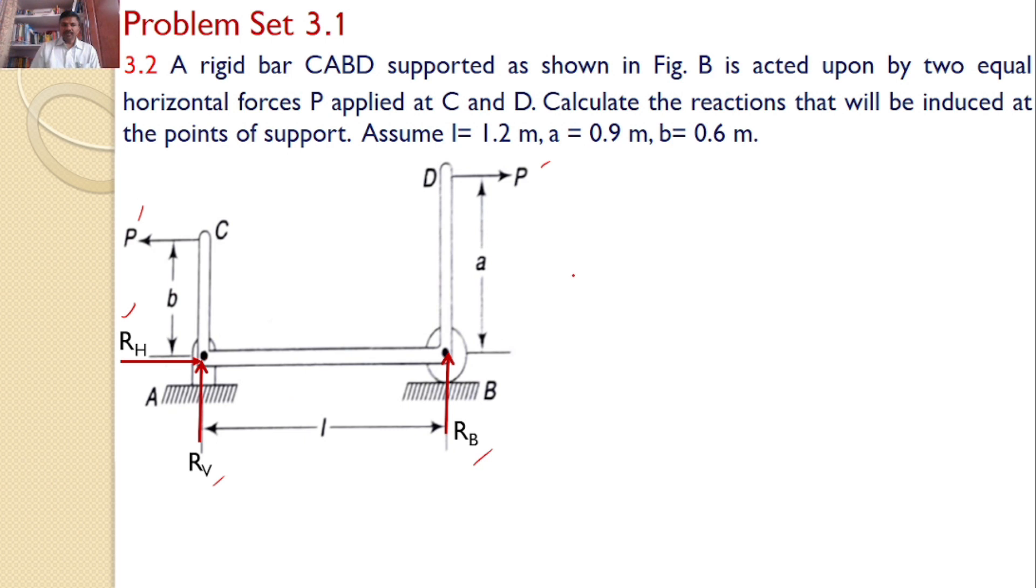Now, first let us consider the equilibrium equation sigma Fx equals 0. There are three forces acting along the x-axis. I will consider this direction is my positive x-axis. In such case, P minus P plus RH equals 0, and RH equals 0.